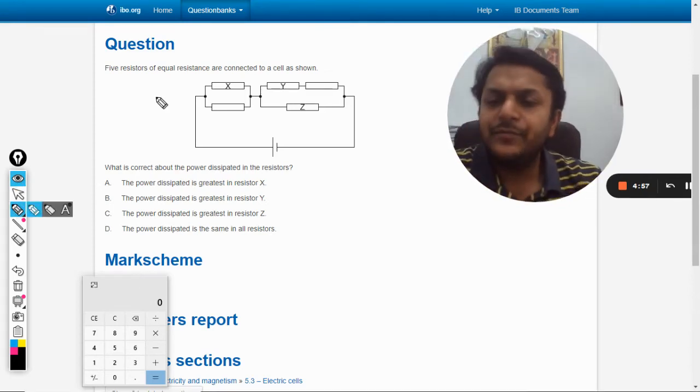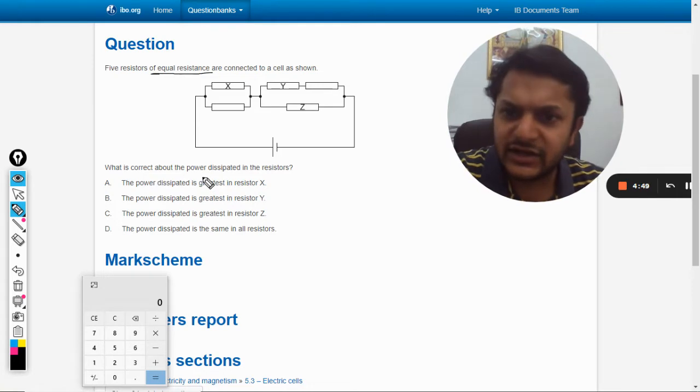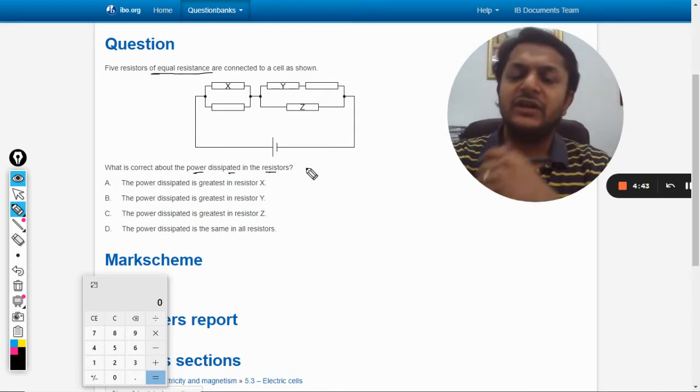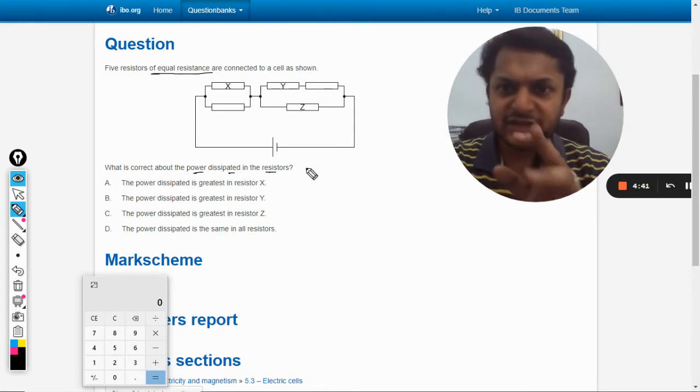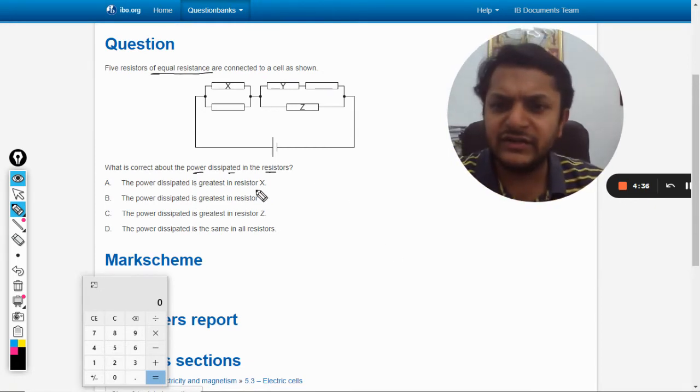Okay, so in this question five resistors of equal resistance are connected to a cell as shown. What is correct about power dissipated in the resistors? We need to comment about the power dissipated in the various resistors like X, Y, and Z. The power dissipated is greatest in X, the power dissipated is greatest in Y, it is greatest in Z, or power dissipated is same.